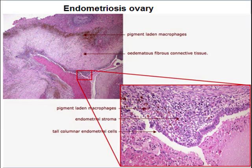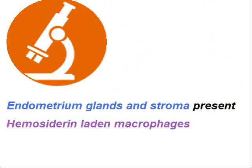Microscopically, there are glands and stroma with hemosiderin-laden macrophages as evidence of old hemorrhage. To summarize microscopically: endometrial glands and stroma present in the wall of the cyst, and hemosiderin-laden macrophages.